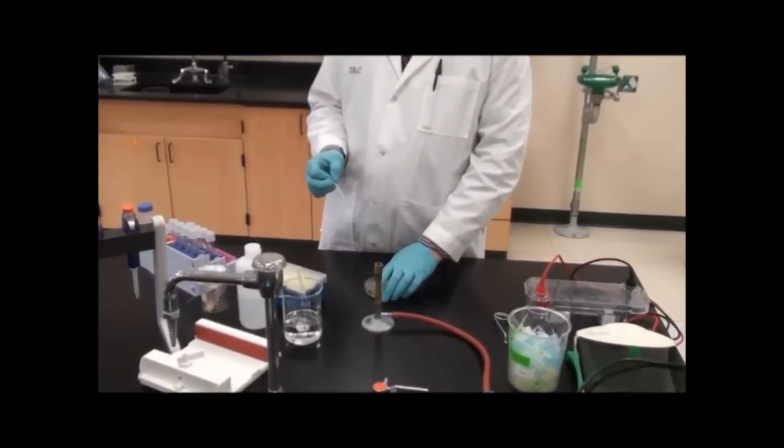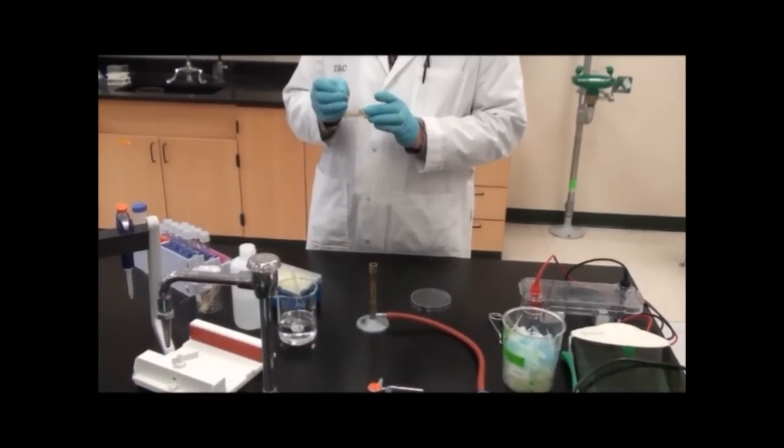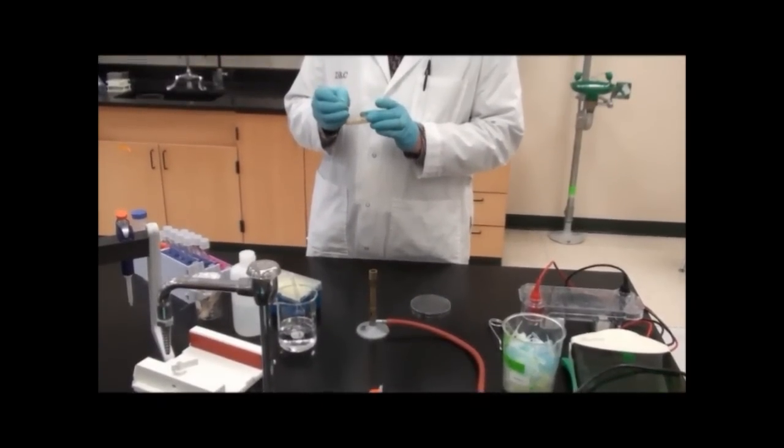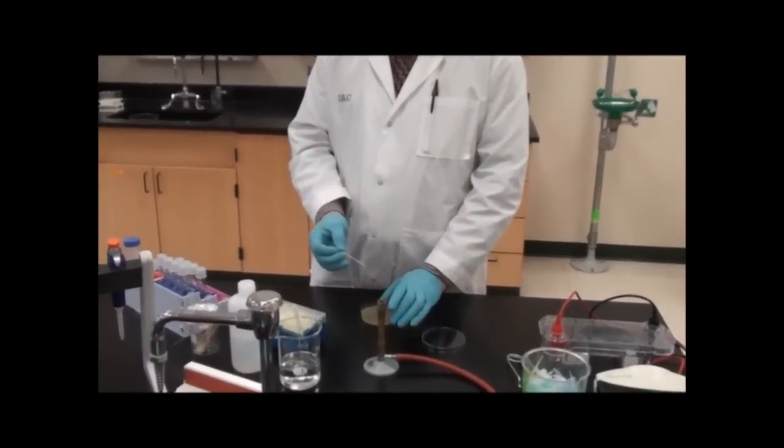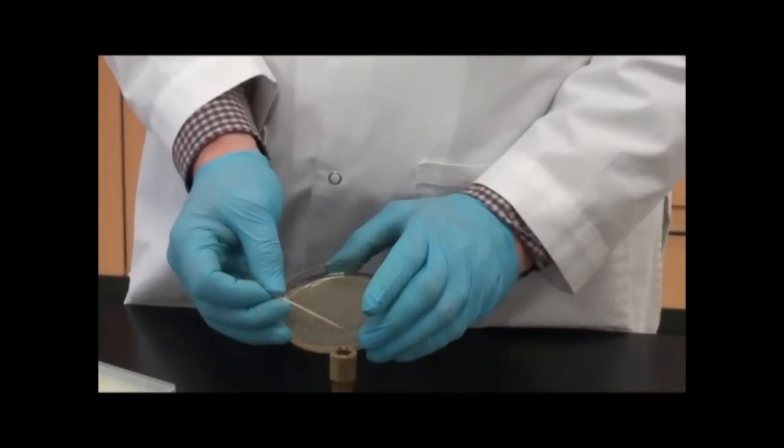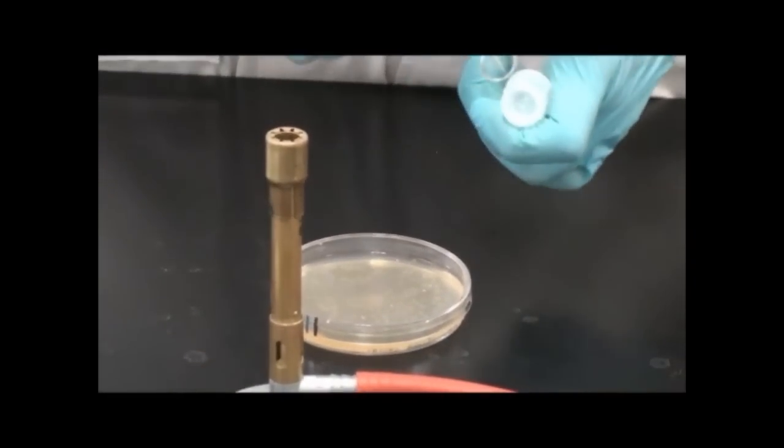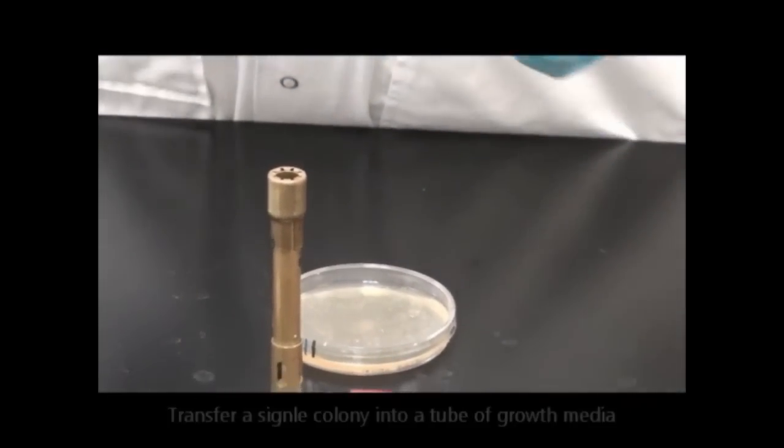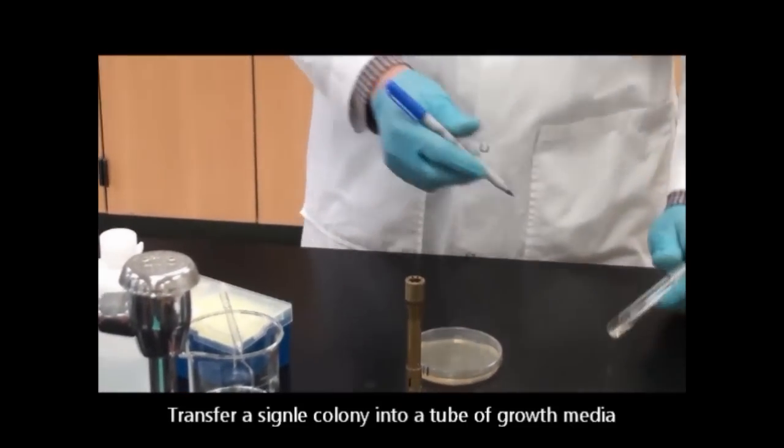I'm going to open up my plate here. I'm going to take this toothpick and just dot a single colony. I don't have to do it hard. I'm just going to dot a single colony like that. Then I'm going to take the toothpick, drop it into my tube that contains my growth media, and I'll label this.